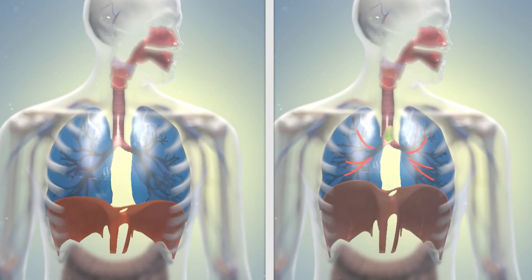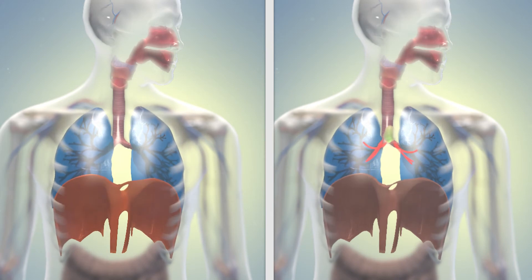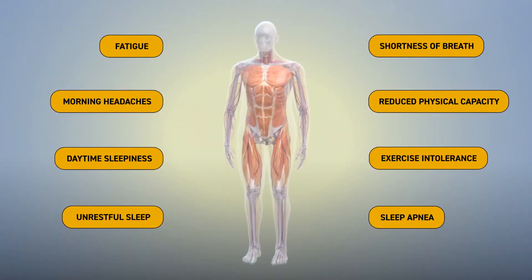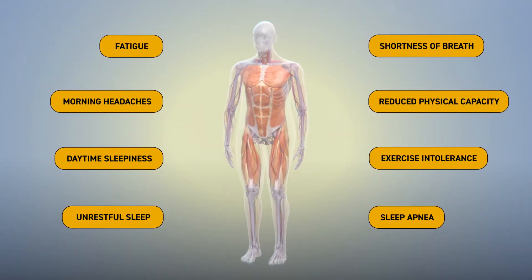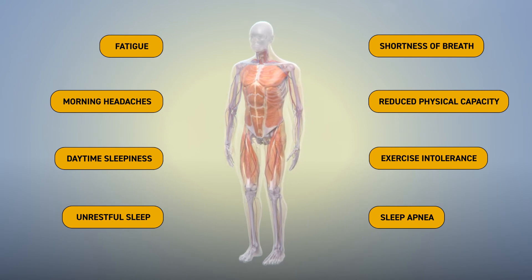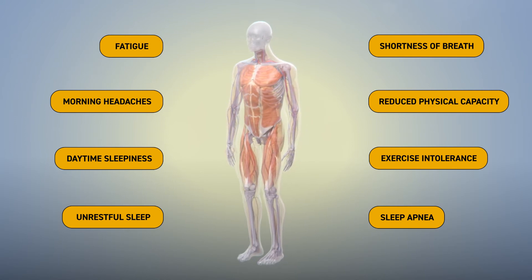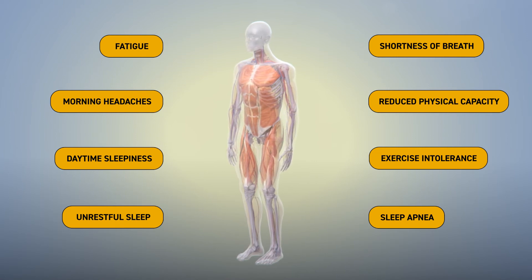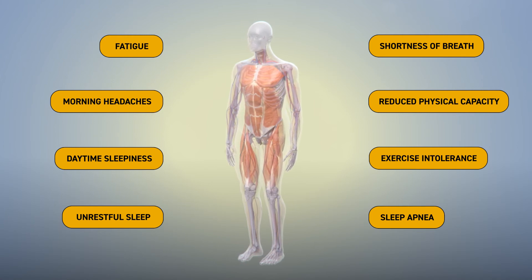Weakness in the diaphragm can also result in impaired cough and ineffective airway clearance, often leading to recurring respiratory infections. Onset of respiratory muscle weakness may be subtle at first and can happen prior to limb muscle weakness. Early symptoms can mimic those of sleep disorders or respiratory issues seen in other neuromuscular diseases, delaying proper diagnosis.